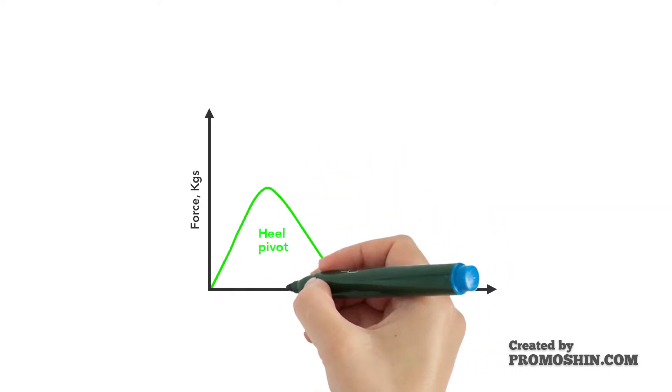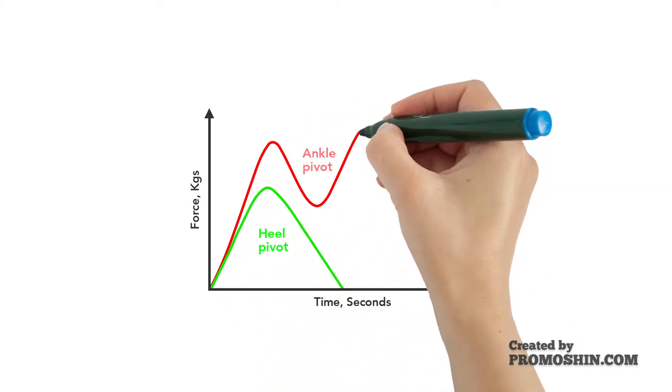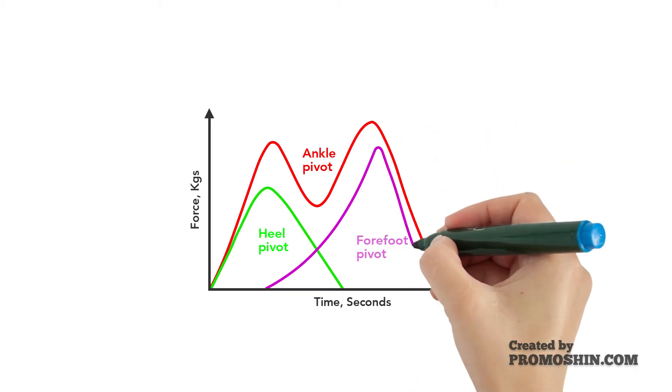A gait curve is a visual representation of measured forces on feet while walking. The curve can be broken down into three primary pivots of gait.